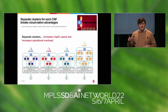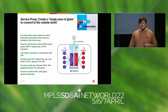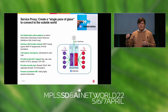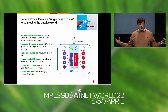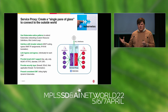What we're recommending is thinking of something new — we call it a service proxy. The idea behind a service proxy is to create a single pane of glass to connect to the outside world — to create that interface that understands how to connect a Kubernetes cluster to this broader network, both in terms of routing and all of these kinds of things, but also how to connect it in terms of representing things as network functions.